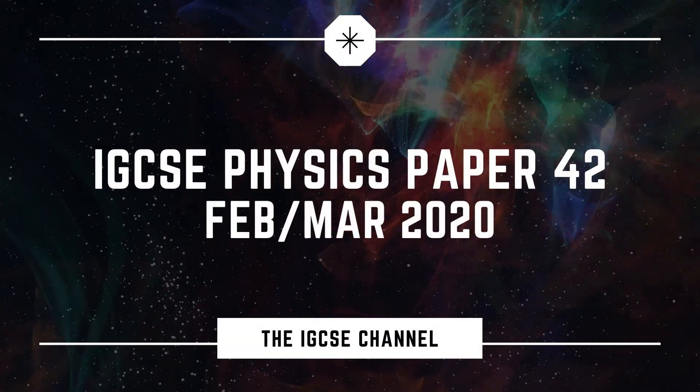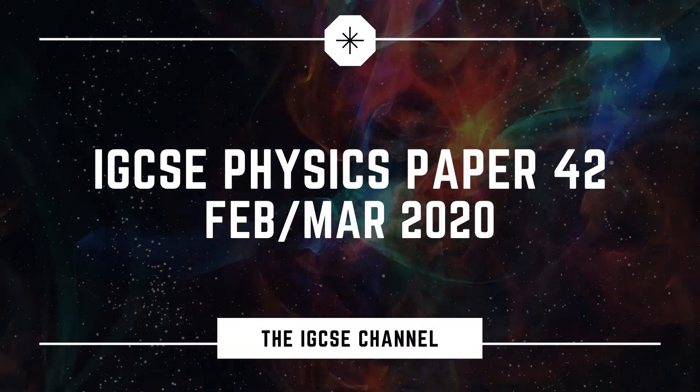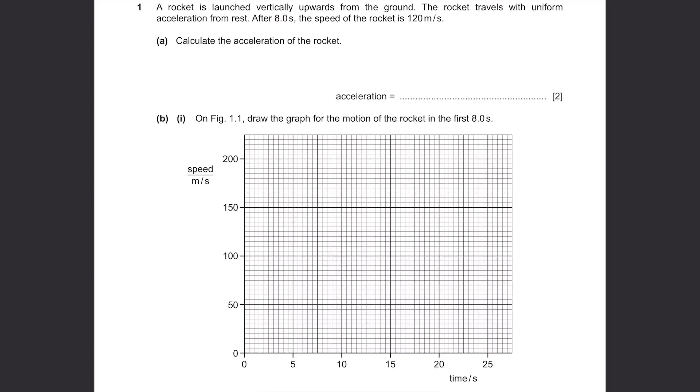Cambridge IGCSE Physics February-March 2020 Paper 42. Question 1. A rocket is launched vertically upwards from the ground.